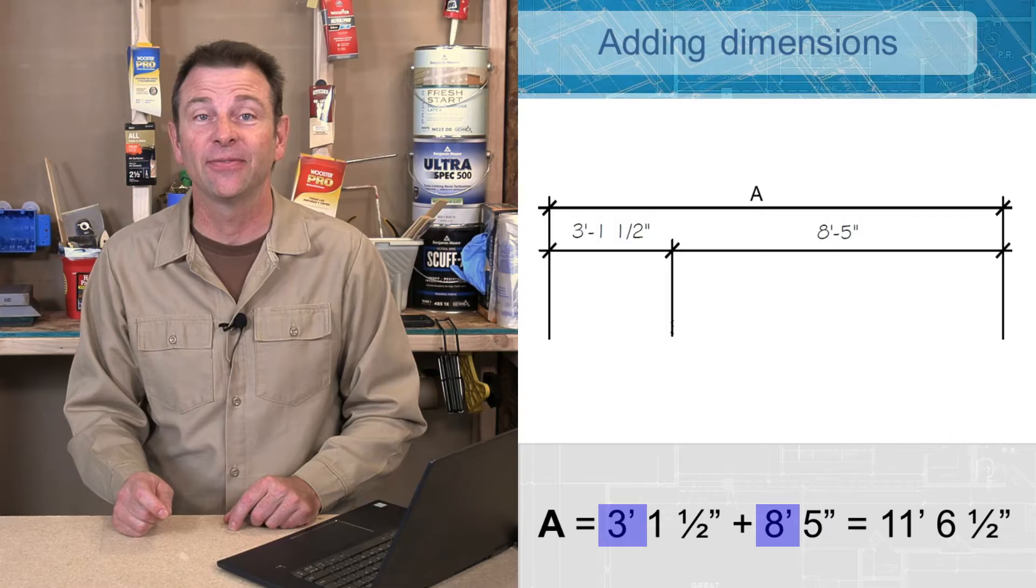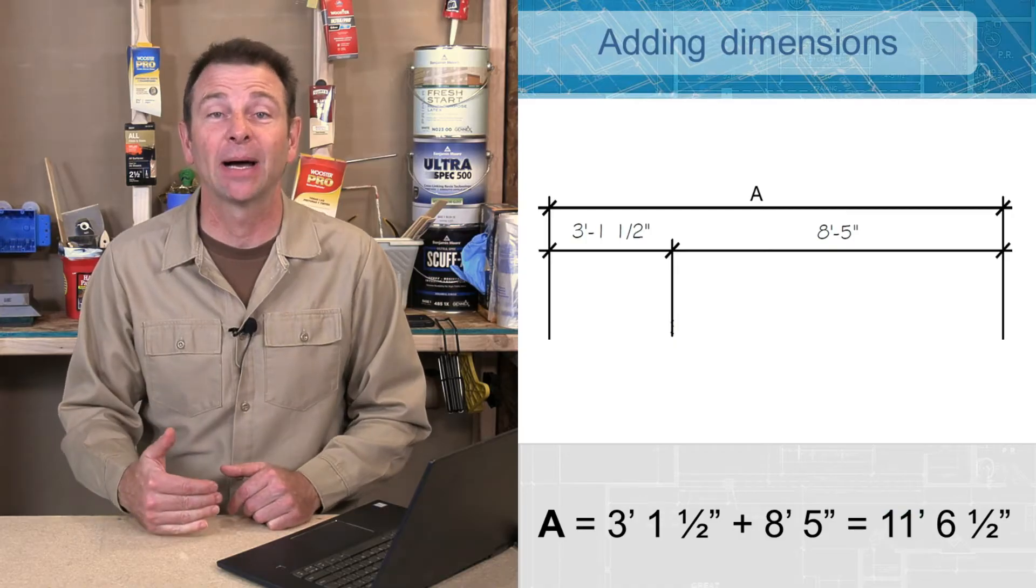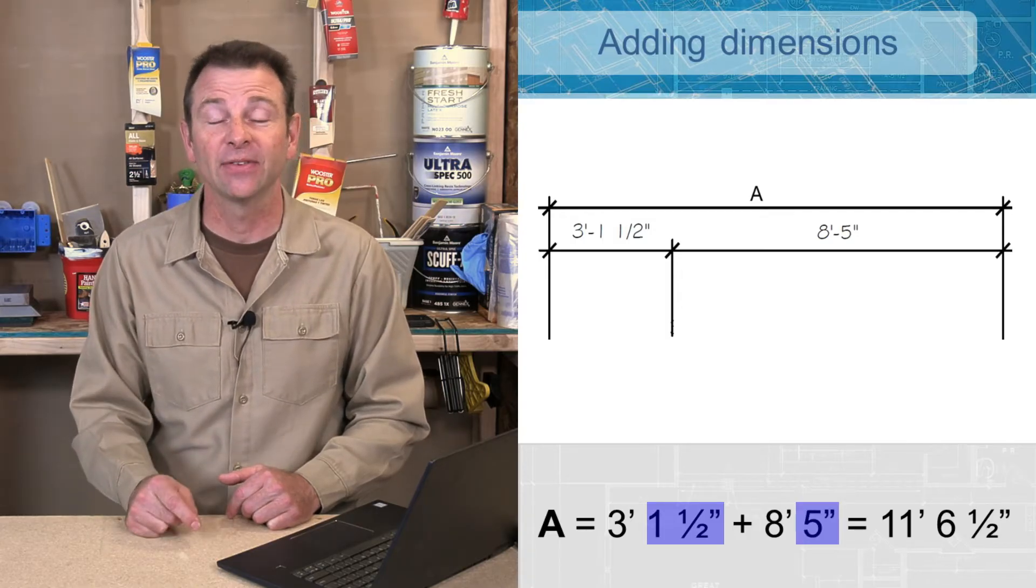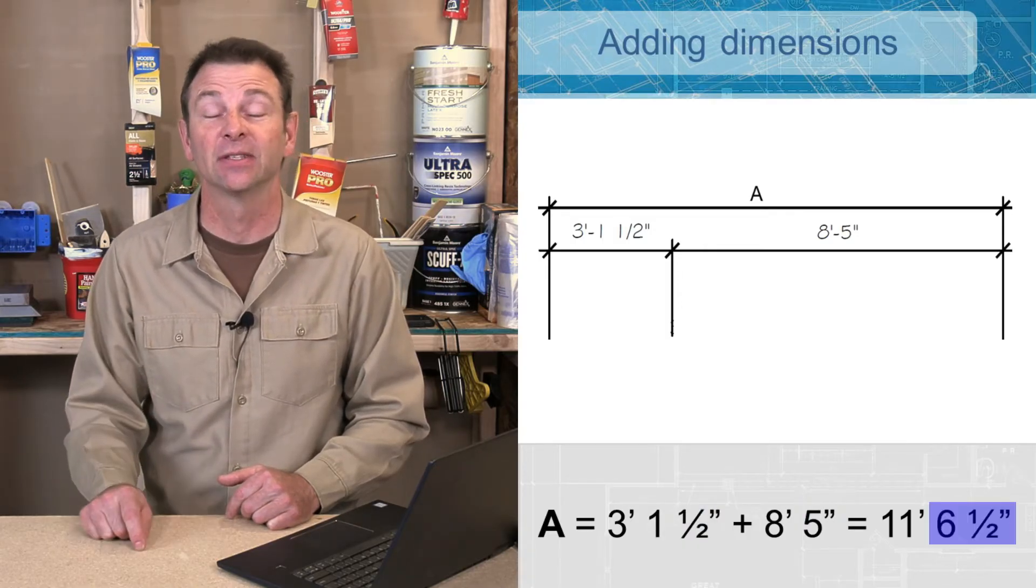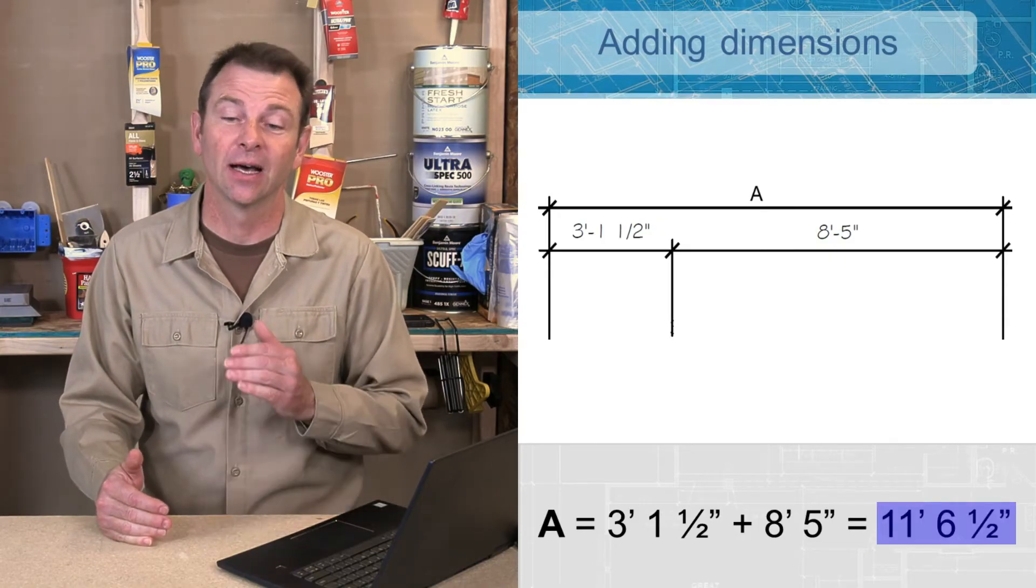I would add the feet together - that's going to be 8 feet added to 3 feet, that's 11 feet. Now I'm going to add my inches together, so I have 1½ inches plus 5 inches, that's going to be 6½ inches. So my total for this is going to be 11 feet 6½ inches.